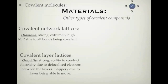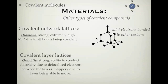Carbon has four electrons in the outer shell, so it can form four covalent bonds. In diamond, all of those electrons form bonds with other carbons. You get a structure where a carbon in the middle forms bonds to other carbons, which each bond to further carbons, and so on and so forth. This is known as a covalent network lattice because you have a network of covalent bonds holding the compound together.